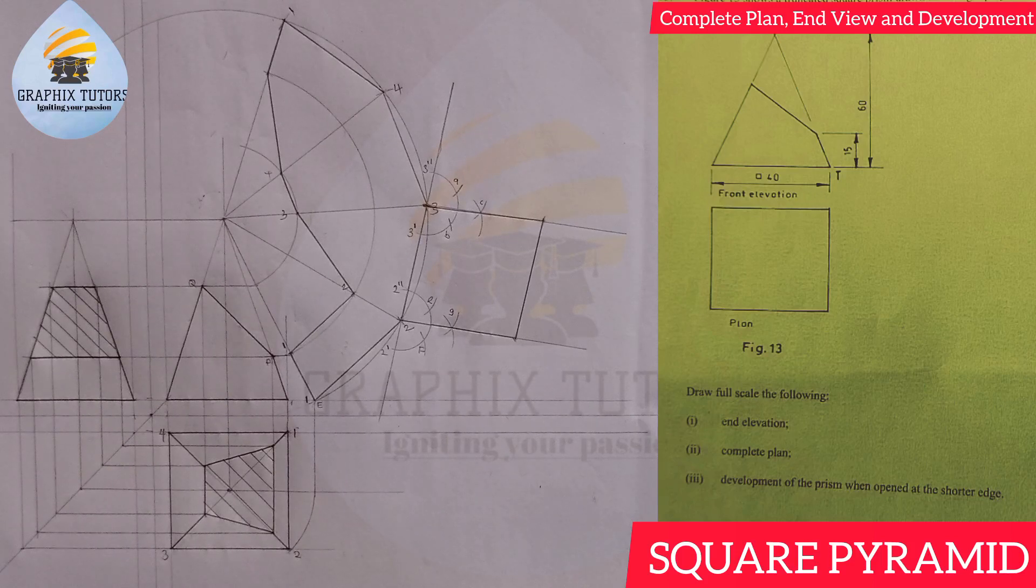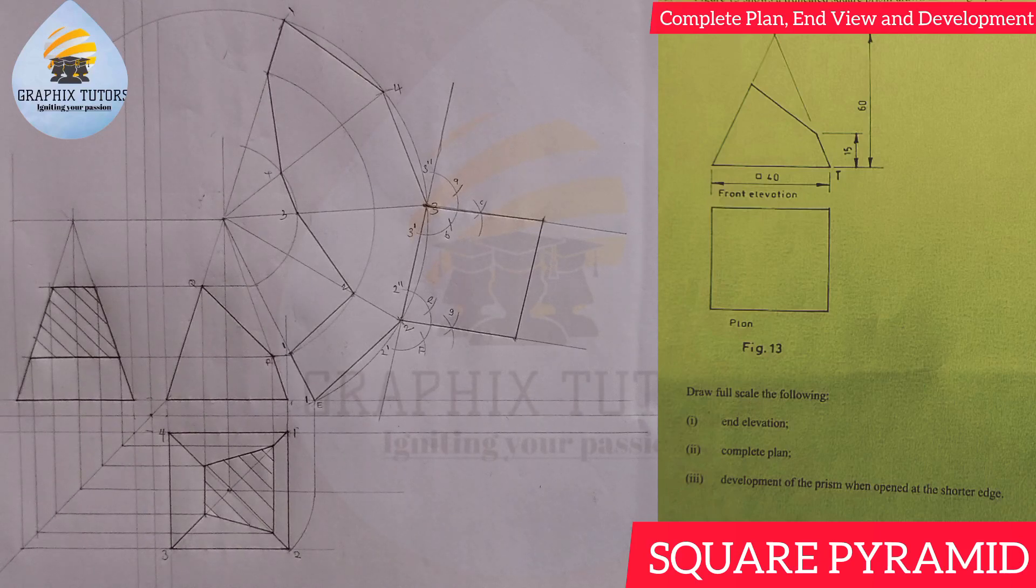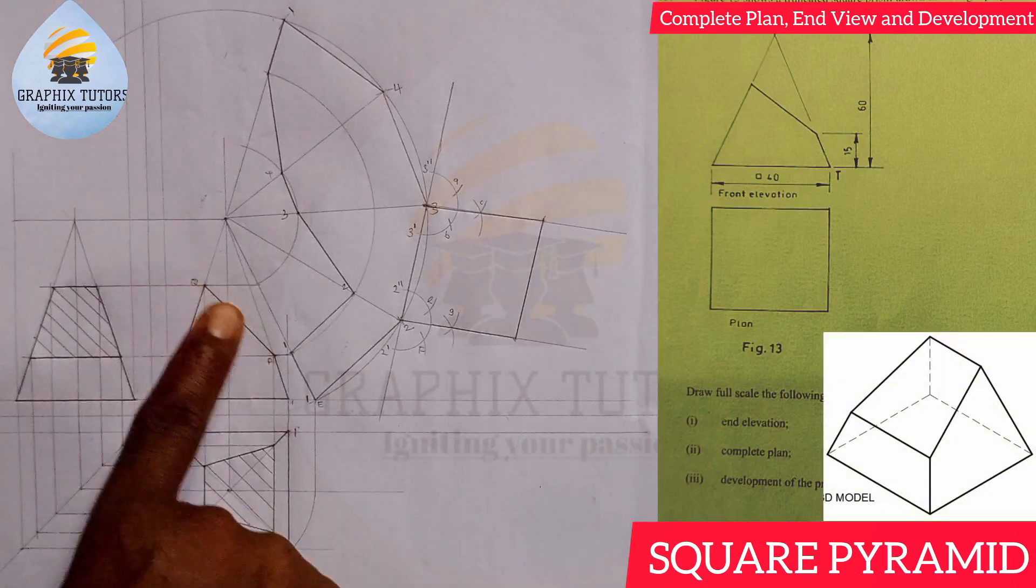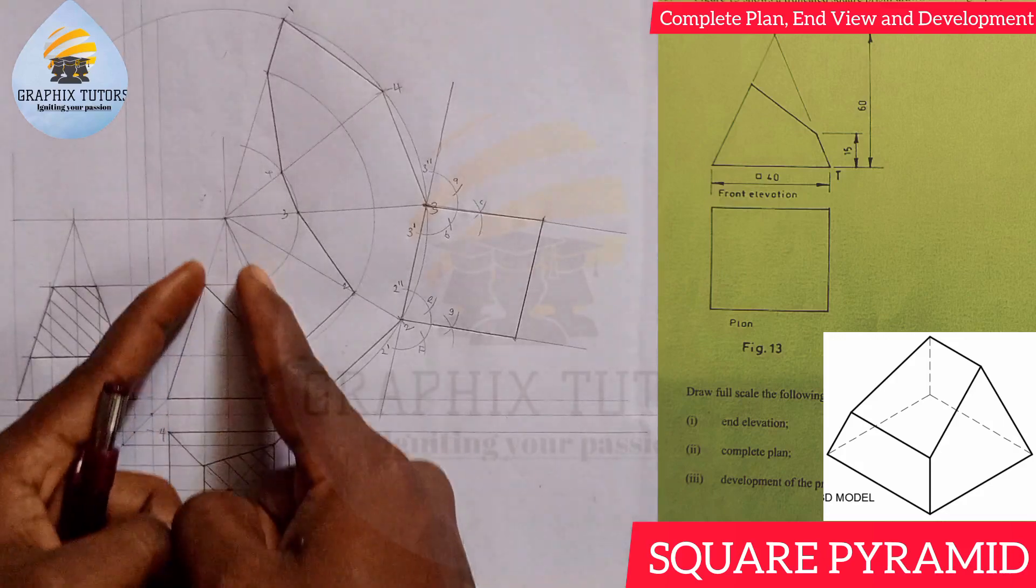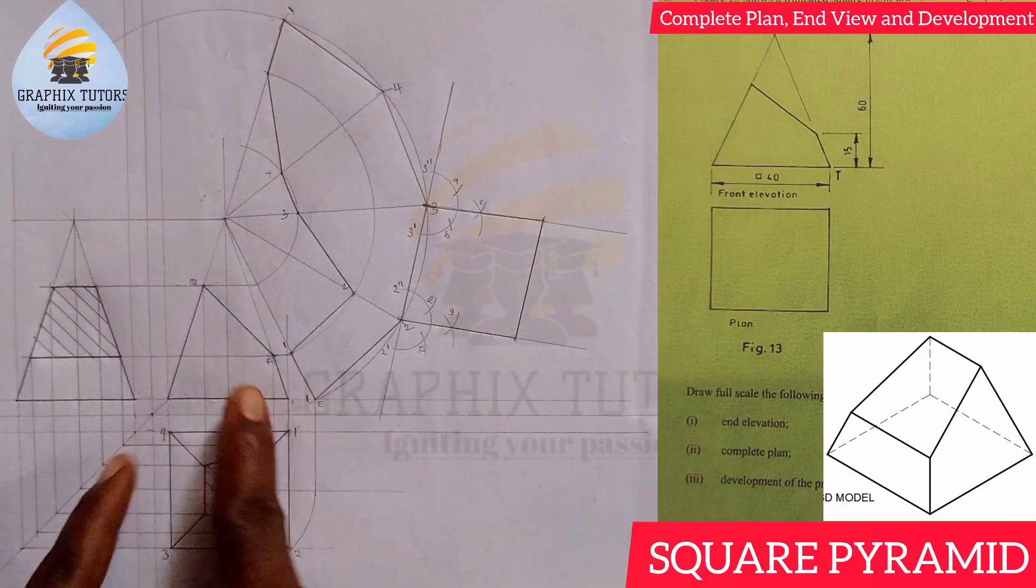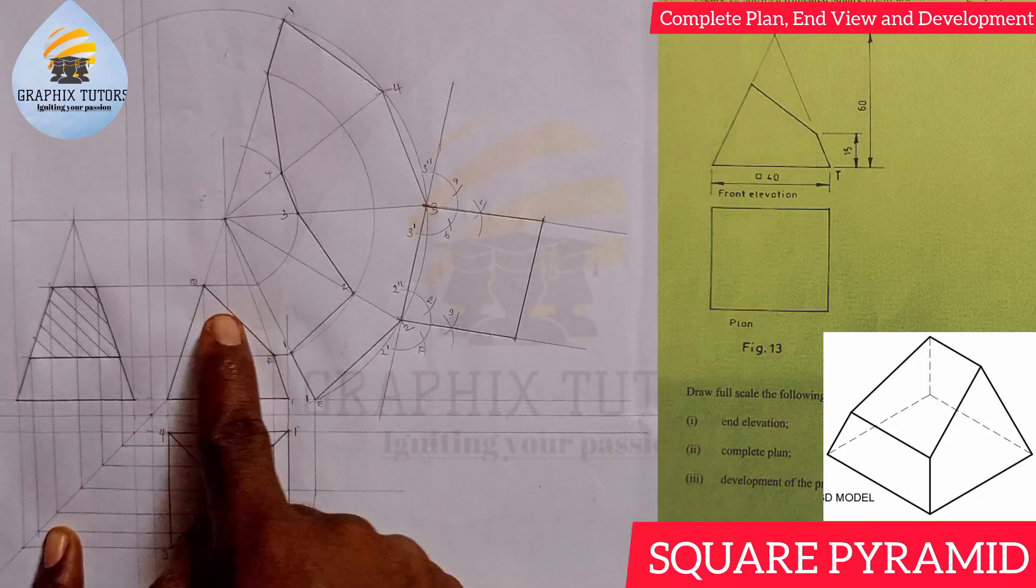Now this is how a pyramid looks like, a square base pyramid. And this is how a truncated pyramid looks like when you cut it at an angle of 45 degrees. So you see that the main pyramid, I now cut it just like what you can see on the screen, giving me this shape.